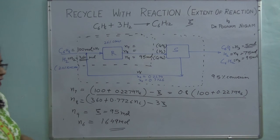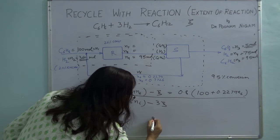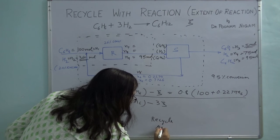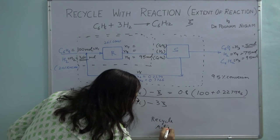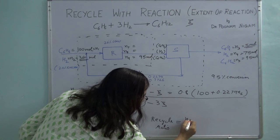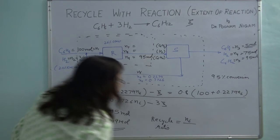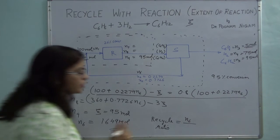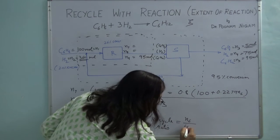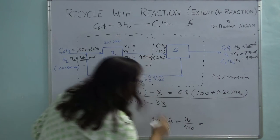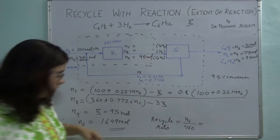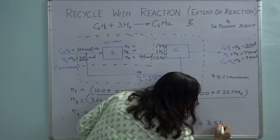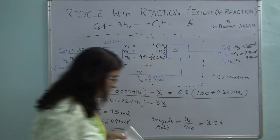To find the recycle ratio: it is the recycle stream flow rate N6 divided by the fresh feed. The fresh feed is 360 + 100 = 460 moles. So the recycle ratio = 1649 / 460 = 3.58.